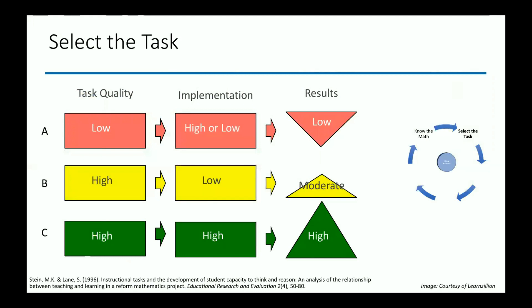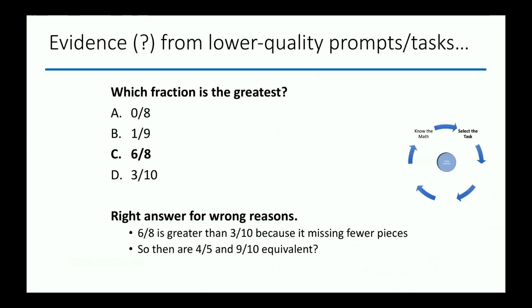Selecting the task is the second part of this process. One of my favorite examples of why tasks matter: Stein and Lane investigated the quality of tasks and how well they're implemented. The quality of the task is critically important. In our classrooms, we want the highest quality implementation always in place. But at the very least, we have to have a high-quality task. When we're selecting tasks, it's imperative — especially for evidence — to have a really good task so that we can mine really good information.